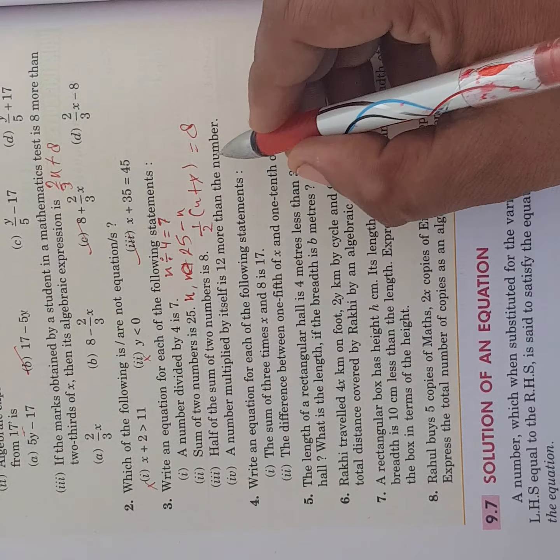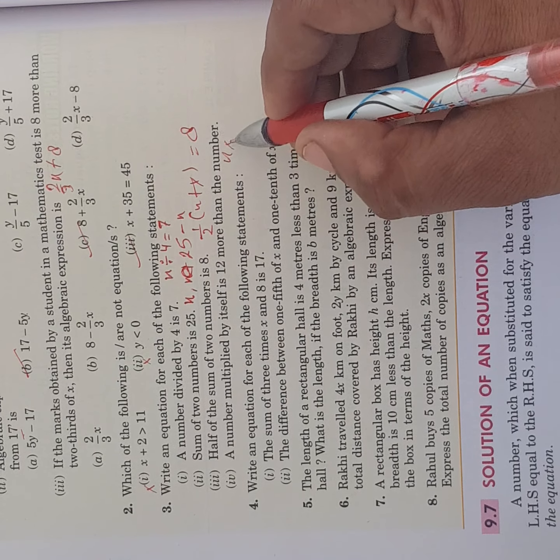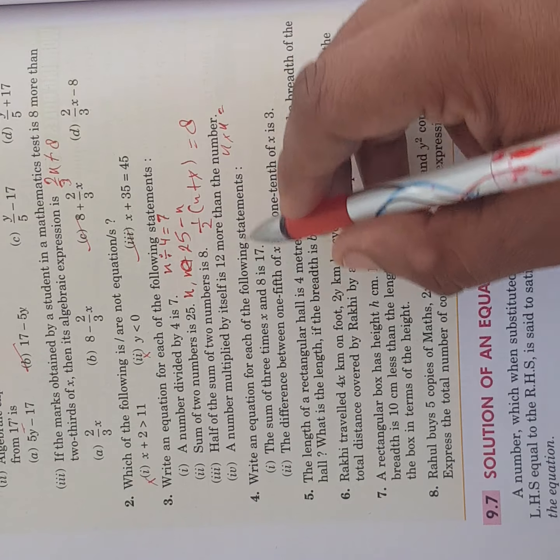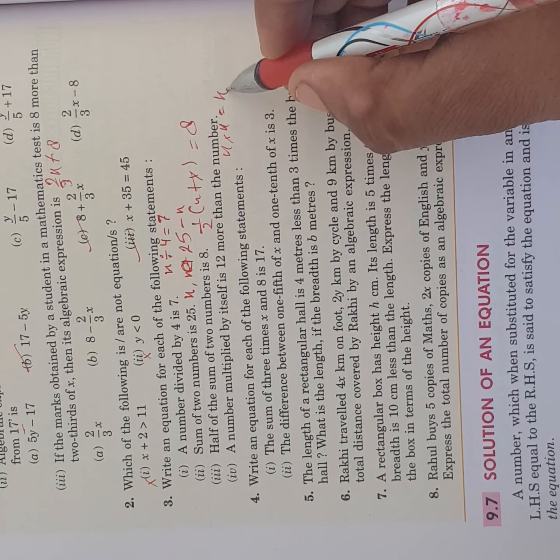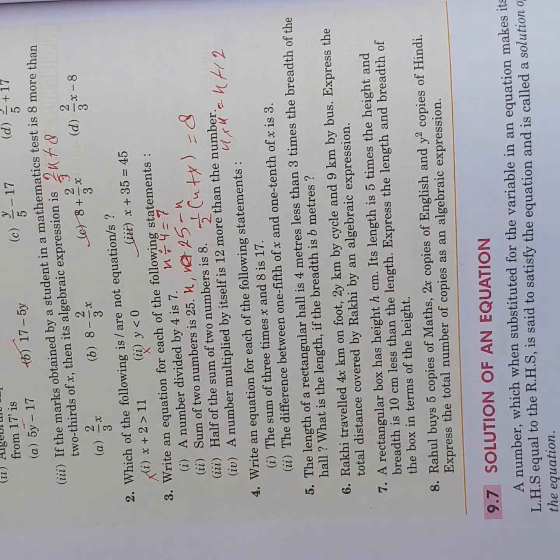A number multiplied by itself is 12 more than the number. A number, multiplied by itself, if we multiply it by itself, then how much will we get, 12 more than the number. So the number was x, 12 more than it. So this is it.